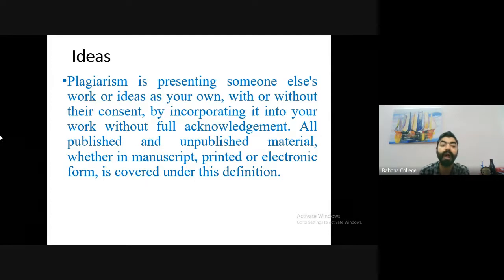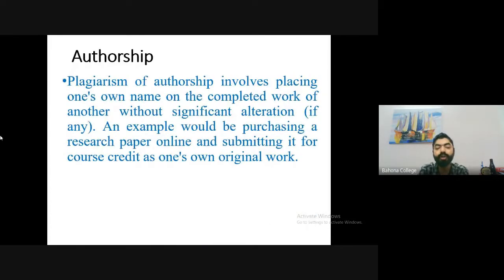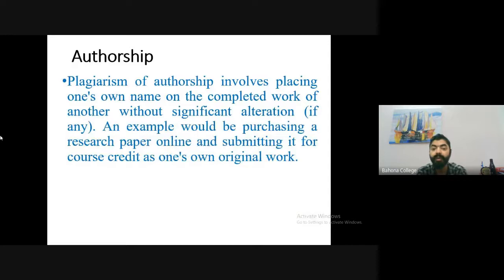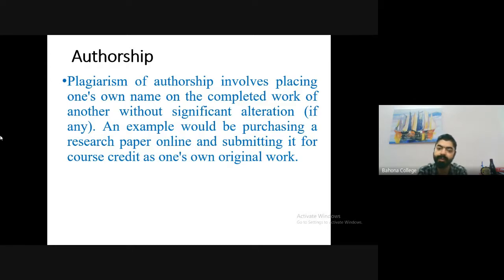Authorship plagiarism involves placing one's own name on the completed work of another without significant alteration. For example, if someone puts their name on your article without your consent, that is authorship plagiarism. Another example would be purchasing a research paper online and submitting it as your own original work.